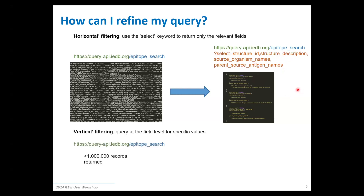The other way is vertical filtering — the meat and potatoes of how you'd really want to query the database. This is how you filter based on the criteria you want within each individual search table. Because the epitope search has over a million records alone, and some assay tables have five or six million records, you wouldn't realistically want to retrieve everything — you want your own particular data out of it.